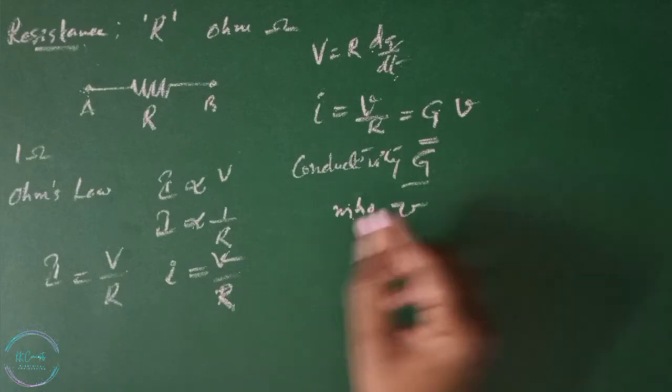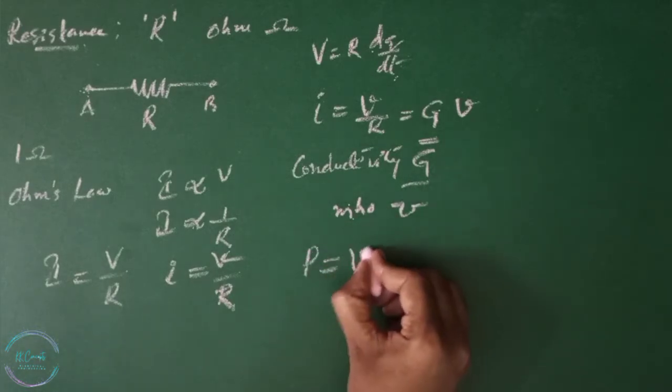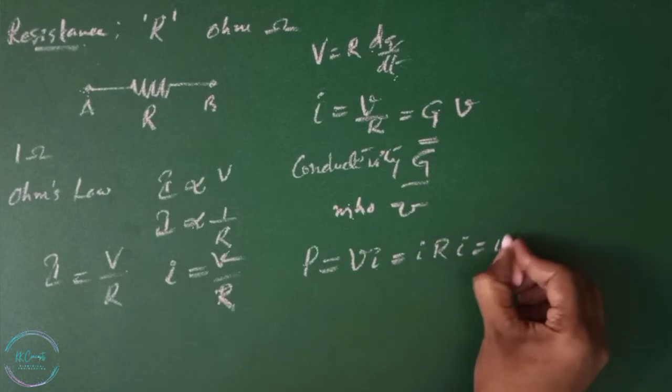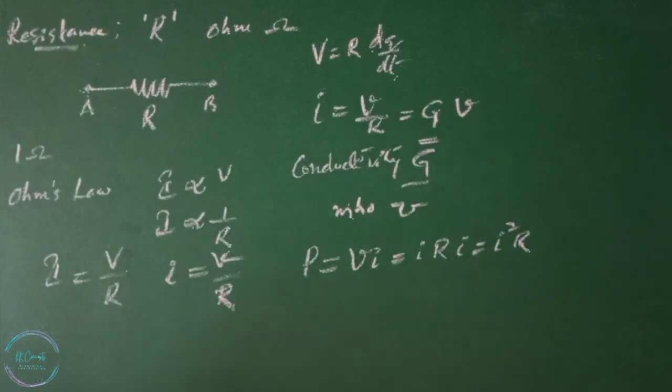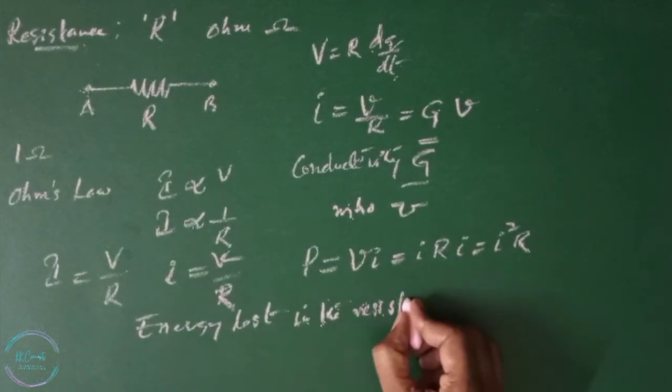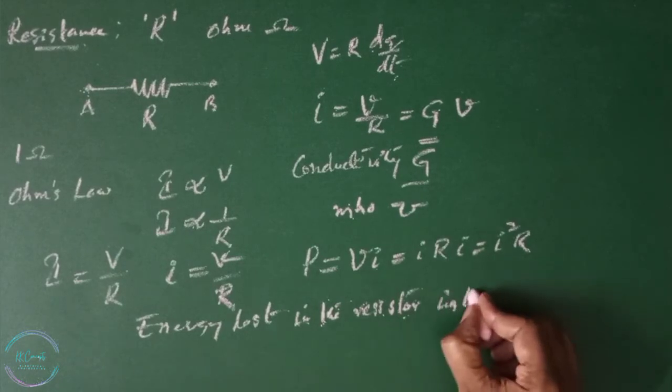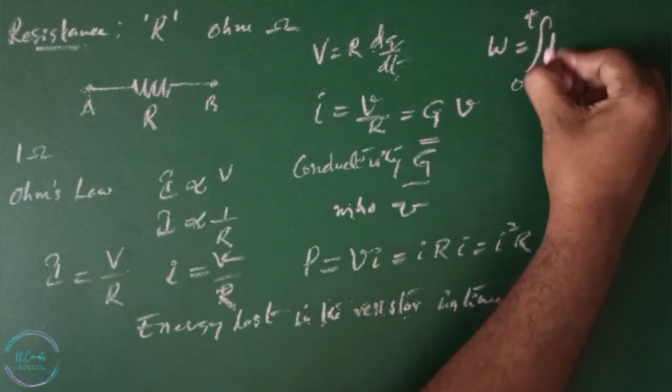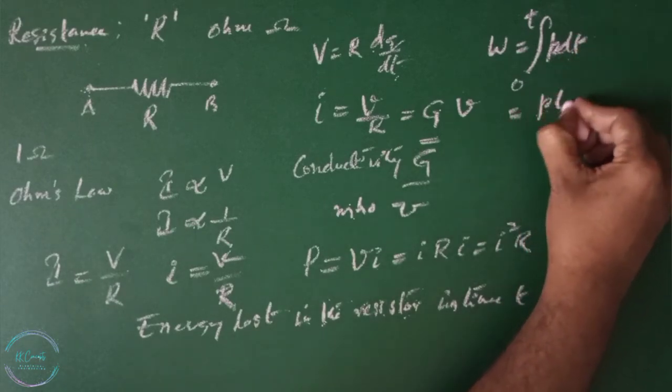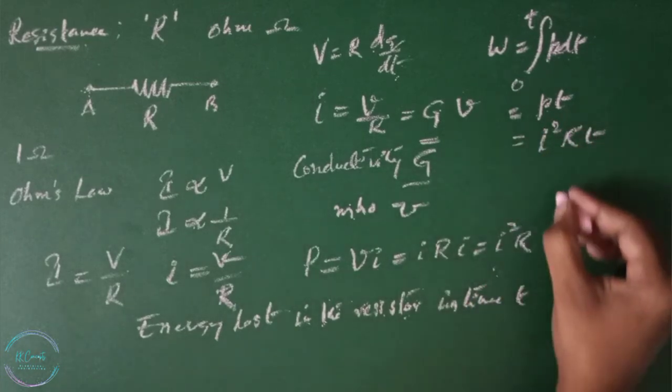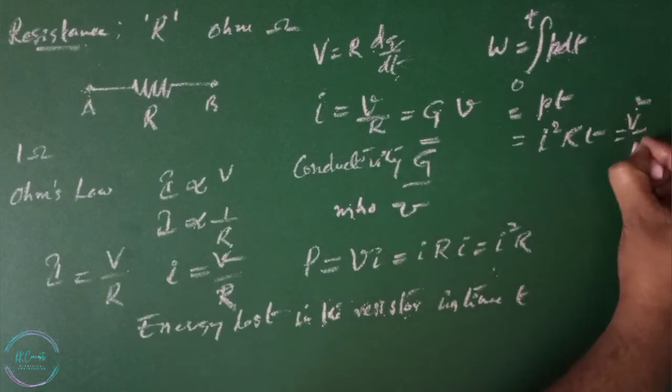The power absorbed by the resistance P is given by V I, that equals V is I R, so I, we can write this I square R, where I is the current in the resistance in amps and V is the voltage across the resistor in volts. Then energy lost by the resistor in time T is given by W equals integral 0 to T P dT, that equals P T, that equals I square R T, or we can write V square by R T.